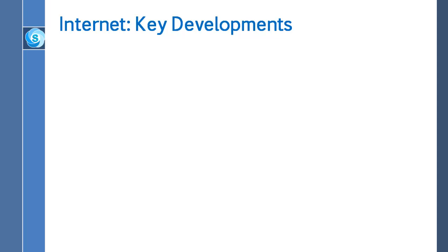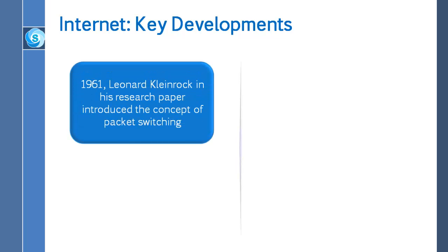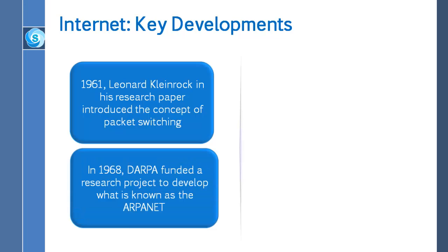Now let me talk about the key developments of the Internet. In 1961, Leonard Kleinrock, in his research paper, introduced the concept of packet switching. In 1968, DARPA, which is a military organization, funded a research project to develop what is known as the ARPANET.